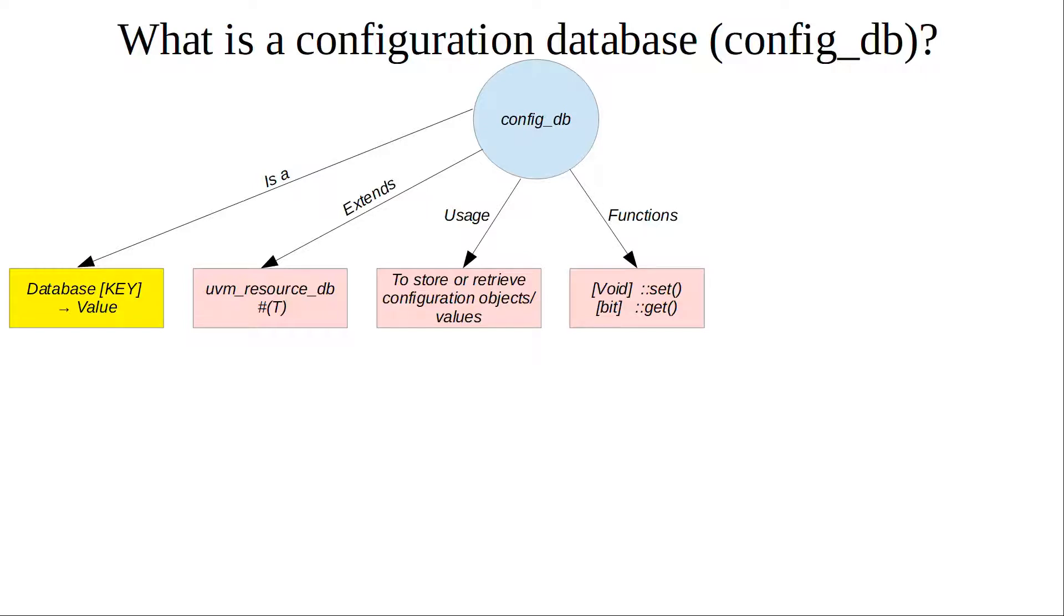The parameters for both functions are pretty much the same: context, field name, instance name, and value. These two functions are static, so to refer to them you need double colons.